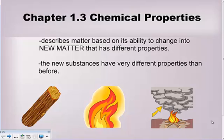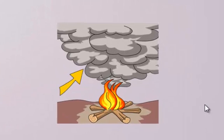Chemical properties are going to change the substance. The new substances have very different properties than they did before. For example, when wood is burned, ash and smoke are created. These new substances have very different properties than the original piece of wood had.